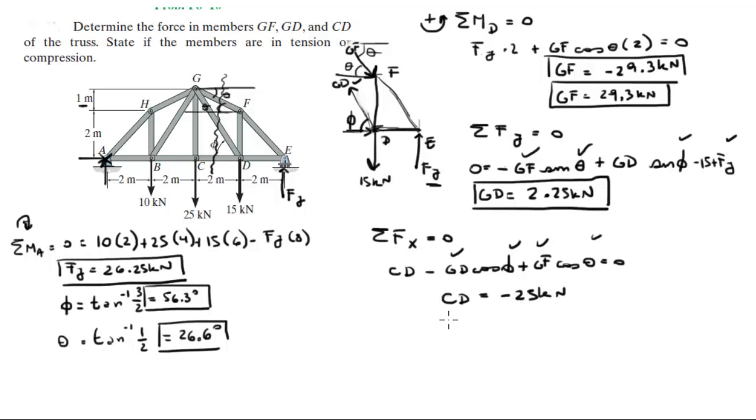Now the fact that it's negative, it just means that we had it aimed in the wrong way. So it's going to the left in reality, so we corrected it and we put that over here: 25 kilonewtons.